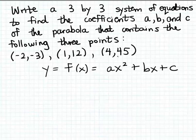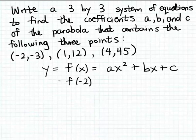To make use of the information given in the problem — the coordinates for these three points — if this formula is going to match these three points, then when we substitute any of these three x coordinates into the formula, we have to get the correct matching y coordinate. For example, if I calculate f(-2) and this formula matches this parabola, then the matching y value has to turn out to be -3, because this parabola has to pass through this point.